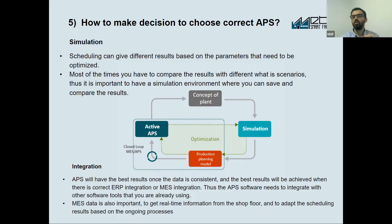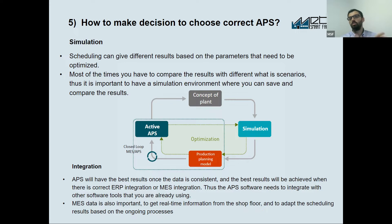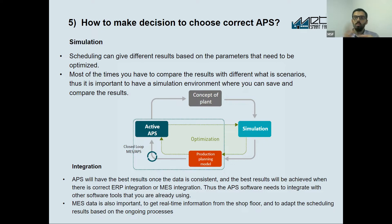One of the main features of an APS system is that it needs to have a simulation, so the scheduling can give you different results based on this simulation where you can adjust the parameters. There are simulations where you can only see the results, but in our case it is important that you can also save the results. Once you save the results, you can get different comparisons and different KPIs based on your scheduling results.